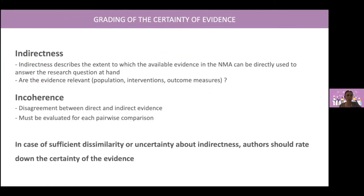Let's focus on two other domains. Indirectness describes the extent to which the available evidence in the network meta-analysis can be directly used to answer the research question. Are our evidence relevant for the target populations? Did we choose the right interventions, the right outcome measures? We've just seen incoherence — the disagreement between direct and indirect evidence — which must be assessed for each pair-wise comparison.